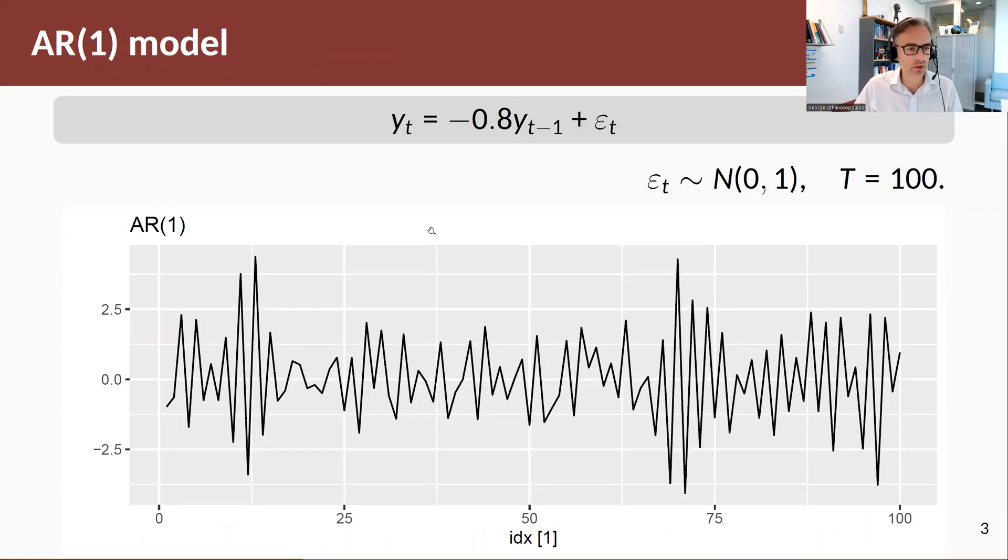Here's an AR1 model where my phi_1 coefficient is -0.8, and I'm generating from a standard normal with variance 0.1. Here's the pattern I get. There are a couple of things to notice about this pattern.